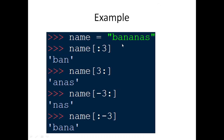Here's another example: if name equals 'bananas', and you give name[:3], it goes from the start up to but excluding the third character — so indices 0, 1, 2 — printing 'ban'. If you give name[3:], it starts from index 3 to the end, printing 'anas'. If you give name[-3:], it starts from the third character from the end, counting -1, -2, -3, printing 'nas'.